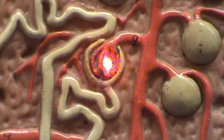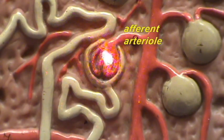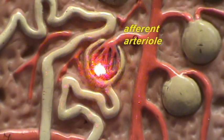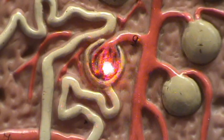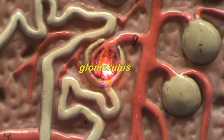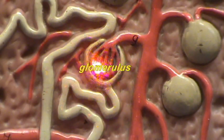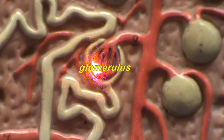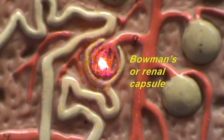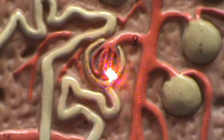Right over here, the afferent arteriole goes into the renal corpuscle, branches into the glomerulus, and right over here we have the Bowman's capsule, or the renal capsule, which is going to collect the filtrate.